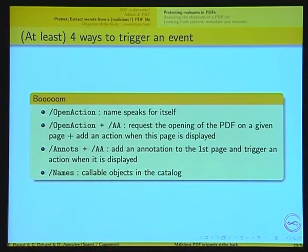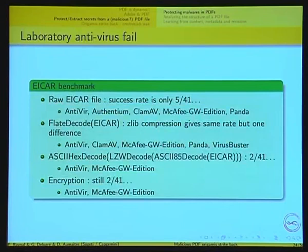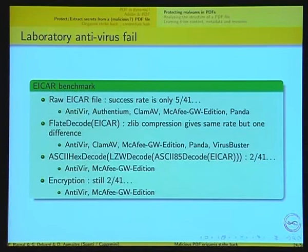What's quite funny is that one year ago the open action was really intensively used, but since six to eight months ago, the slash names trick is really used. You can find PDFs that still use both, but the first one is now broken. I wondered: is it really easy to use a PDF to hide a virus? There are many ways to trigger events and many ways to encode PDF.